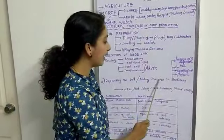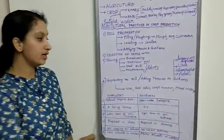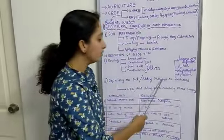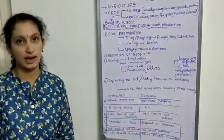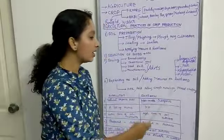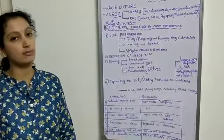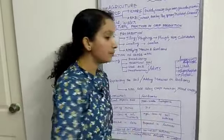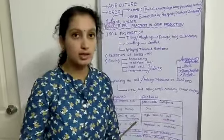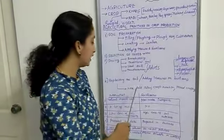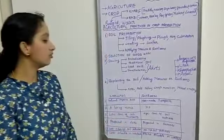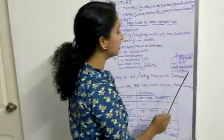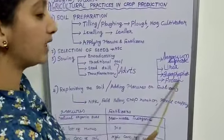Next is adding manure or fertilizers. If we're not following those three methods, we can directly use manure or fertilizers at the same time. Manure is a natural substance formed by decomposition of plants and animals. Fertilizers are made using chemicals containing the main nutrients: nitrogen, phosphorus, and potassium (NPK). Examples of fertilizers are ammonium sulfate, urea, superphosphate, and potash.